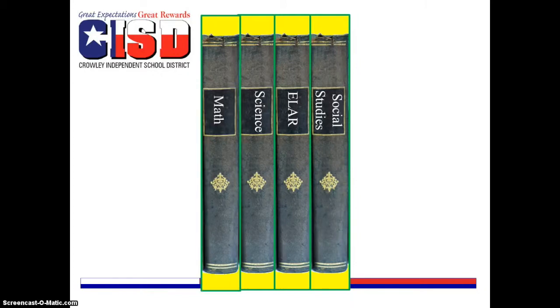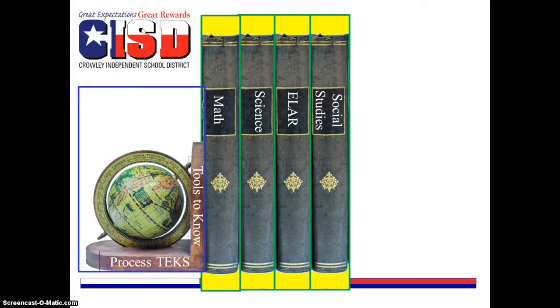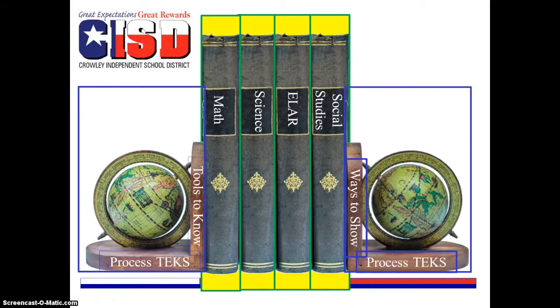Think of your planning as this set of bookends. The process standards hold up the readiness standards. The supporting standards are spiraled in with the readiness standards. Let's take a closer look.